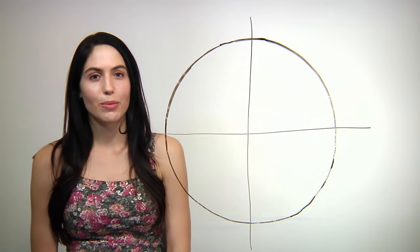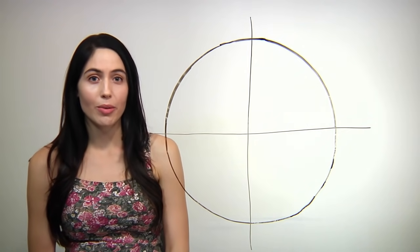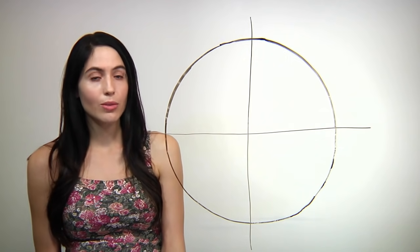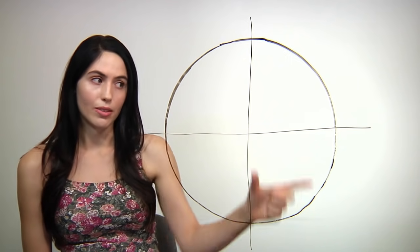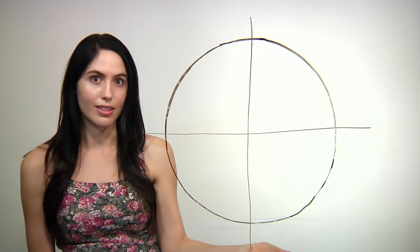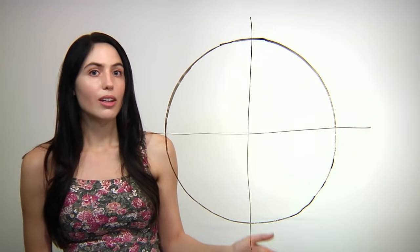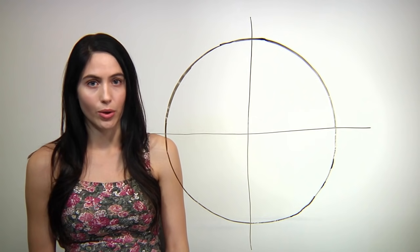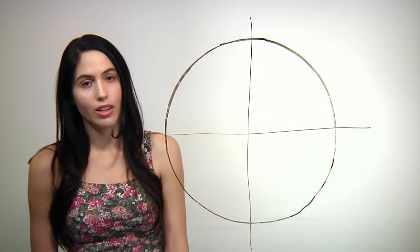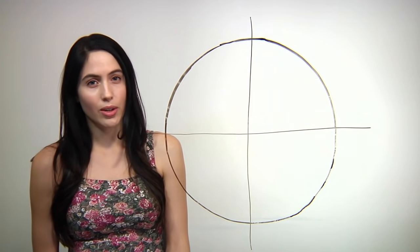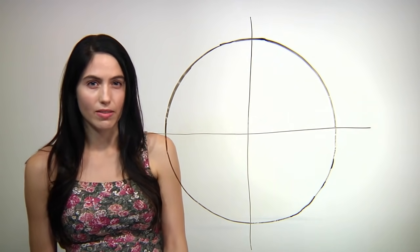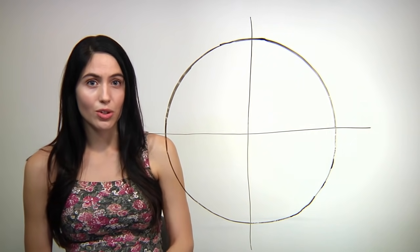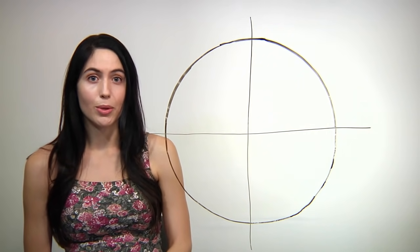Hi guys, I'm Nancy and I'm going to show you how to remember the unit circle in trigonometry. What is the unit circle? Well, it just means a circle with a radius of one. There are a lot of angle values and sine and cosine coordinates that you end up having to memorize, so knowing the unit circle is kind of a necessary evil. But don't worry, I'm going to show you some patterns and tricks that will help you remember it.